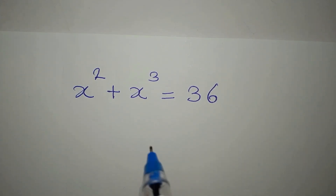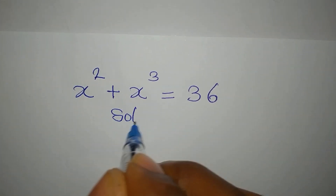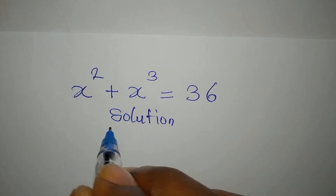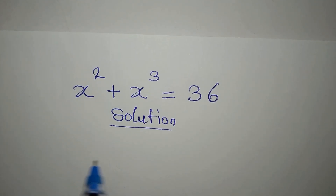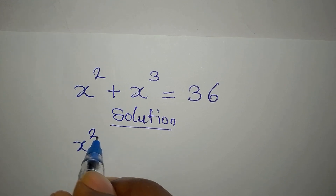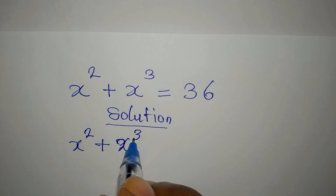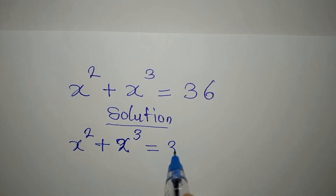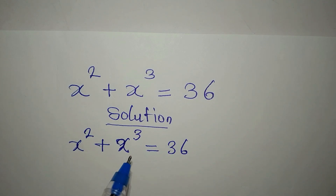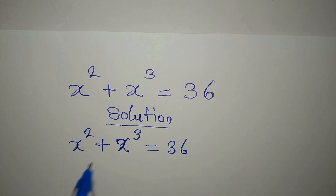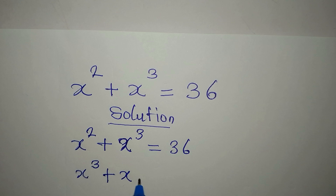Hello everyone, let's provide the complete solution to this equation: x squared plus x to the power of 3 equals 36. It is expected that the term with the highest power appears first, so we write x to the power of 3 plus x to the power of 2 equals 36.